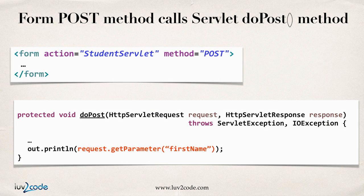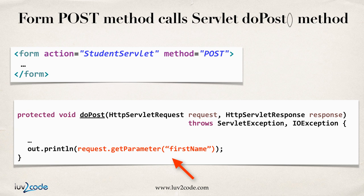Now let's move forward and look at the POST method. To send data over using a POST, in our form we say form action, and then we have method equals POST. Now in our servlet code we need to override the doPost method. This doPost method has the same parameters as doGet — it has a request and a response. For the doPost method, you simply read the form data by saying request.getParameter, so the exact same method call to read form data using POST.